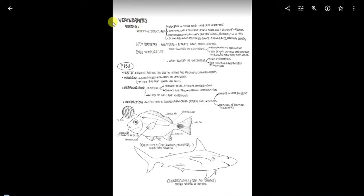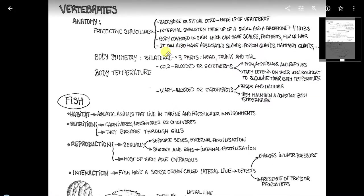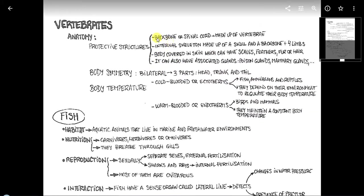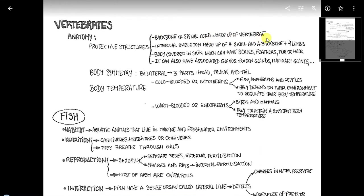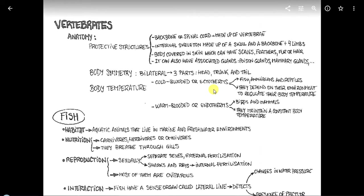Hello again, we are going to continue studying the vertebrates. Anatomy. They have protective structures like backbone or spinal cord made up of vertebrae, internal skeleton made up of a skull and a backbone, more for limbs, body covered in skin which can have scales, feathers, fur or hair. It can also have associated glands, poison glands, mammary glands, etc.